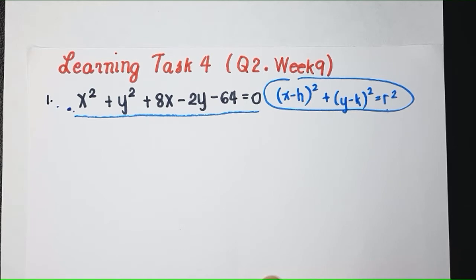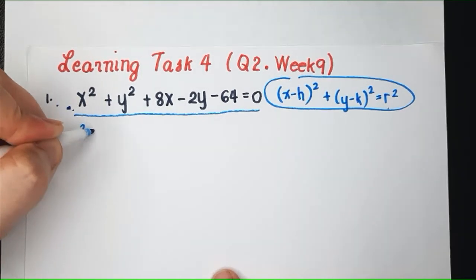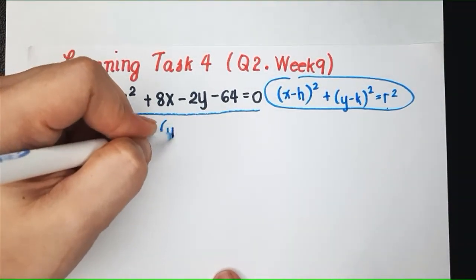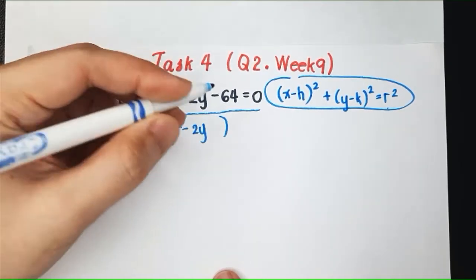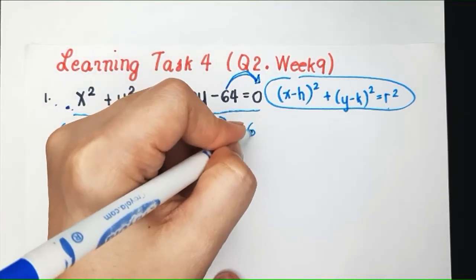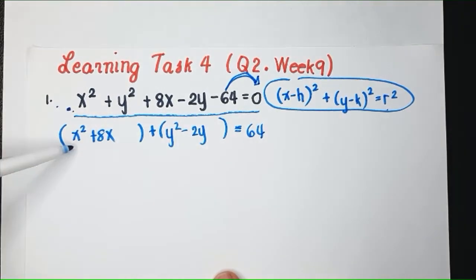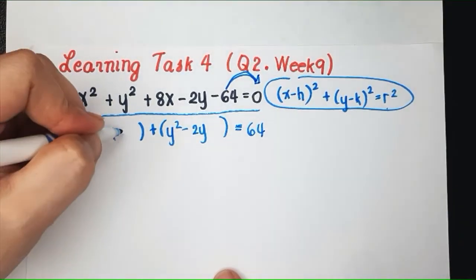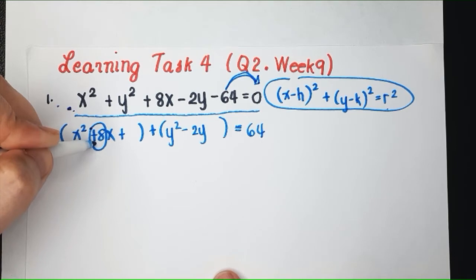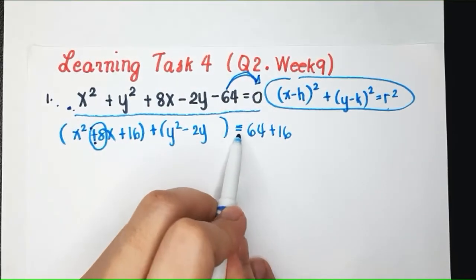Completing the square is what I'll use here. How do we perform completing the square again? Let's group all the terms with x. We transpose the constant to the other side of the equation, so we have positive 64 here. And then, we try to make this perfect square trinomial. What do I add here?